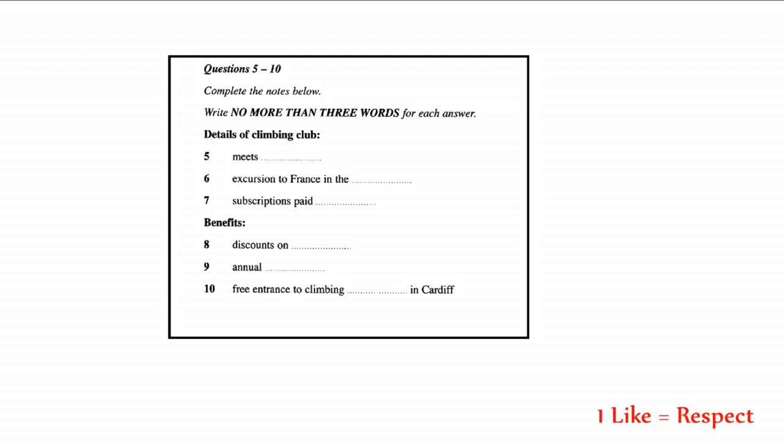OK. It says in the leaflet that they get together twice a month. Is that right? Yes. Oh, you must join. It's really good fun. We go away quite a bit to North Wales. And every year we have a special excursion, usually to France, which is where we're going this year in the spring. The weather's too unpredictable in the autumn. Wow. That sounds good.